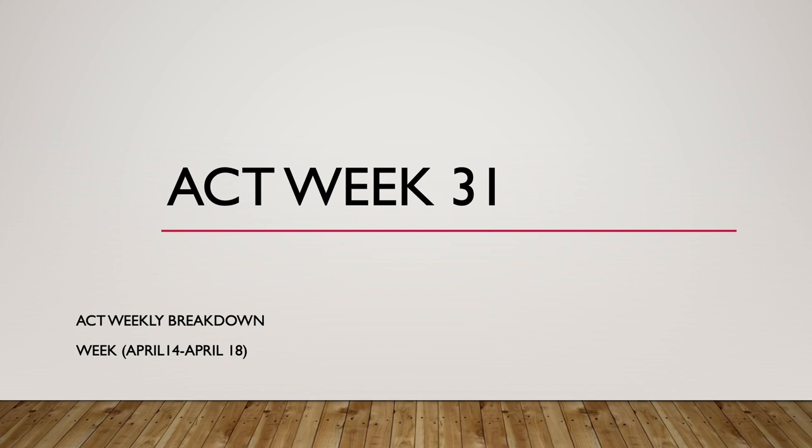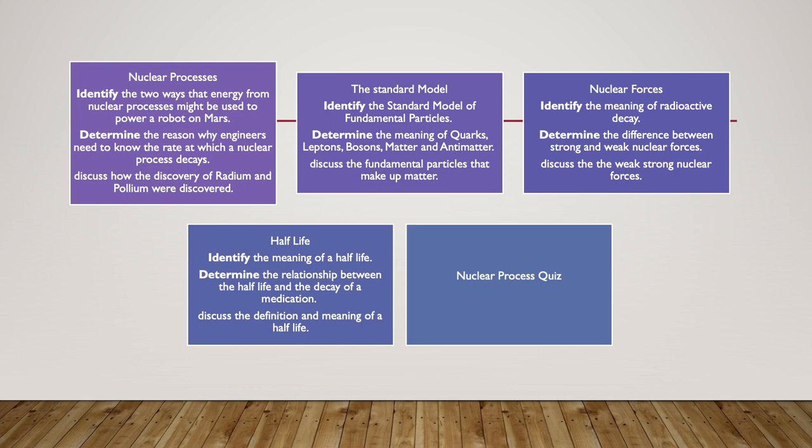On Sunday, we will be going over nuclear processes. We will be able to identify the two ways that energy from nuclear processes might be used to power a robot on Mars, determine the reasons why engineers need to know the rate at which a nuclear process decays, and discuss how the discovery of radium and polonium were discovered.